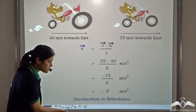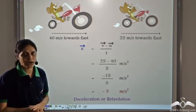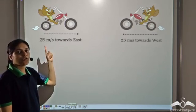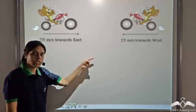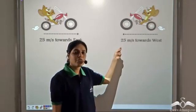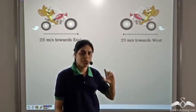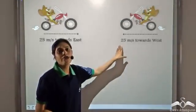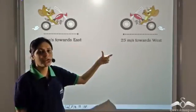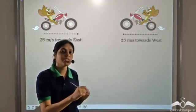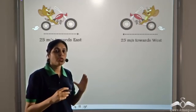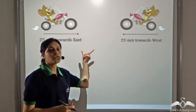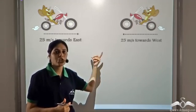Now the third case: Jerry is first travelling at 25 m/s towards east, and after 5 seconds he was travelling at 25 m/s towards west. Is he accelerating? Yes, even this is acceleration. Here the magnitude of velocity is the same, but the direction has changed — earlier east, now west. Any change in velocity is called acceleration, so even in this case Jerry is accelerating.